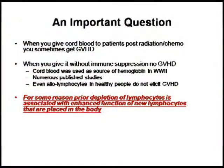We know that because cord blood used to be used in World War II as a source of hemoglobin — just transfusion when they ran out of blood — and nobody reported graft-versus-host disease. We also know that cord blood was used in Africa and in India, and as many publications talk about, even 32 cord blood bags have been used allogeneically, non-matched, and no graft-versus-host disease.